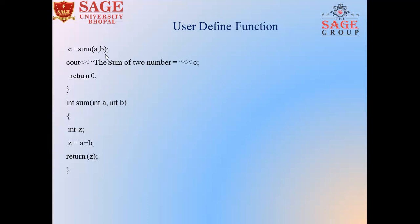And the answer returned from sum function will be stored in C variable. We will print the C variable here - the sum of two numbers. The value of C will be displayed here. And return zero.